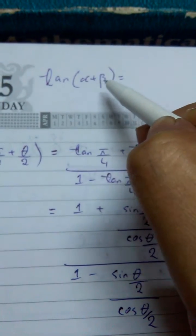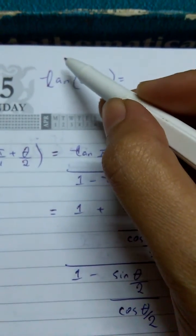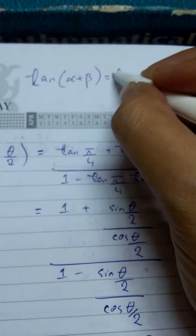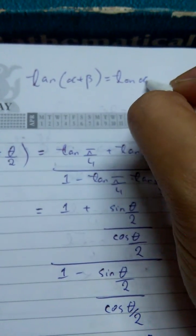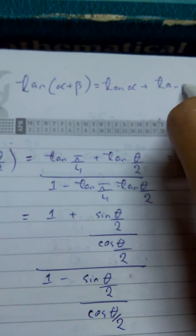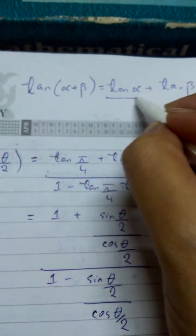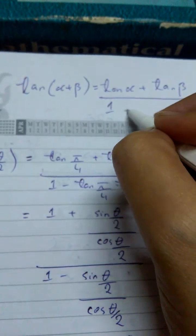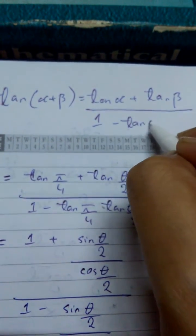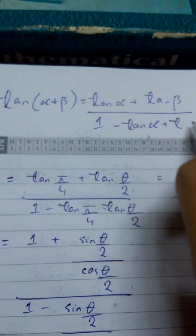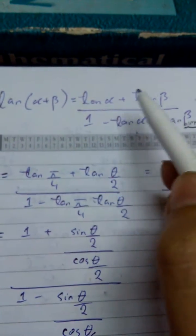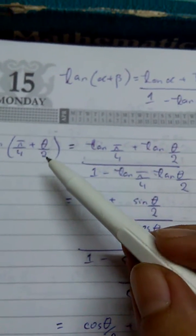So suppose that if you are having two angles and there's a summation of these two angles, what will be the tangent of that summation of two angles? It is found to be tan α plus tan β over 1 minus tan α tan β. So this is the formula that we are going to apply over here.